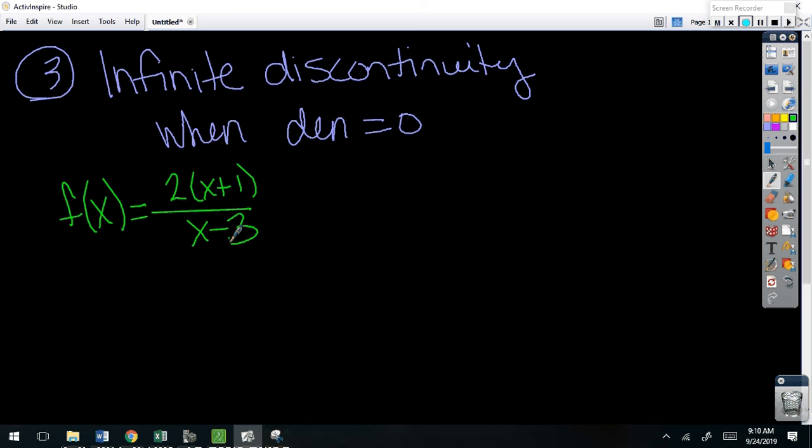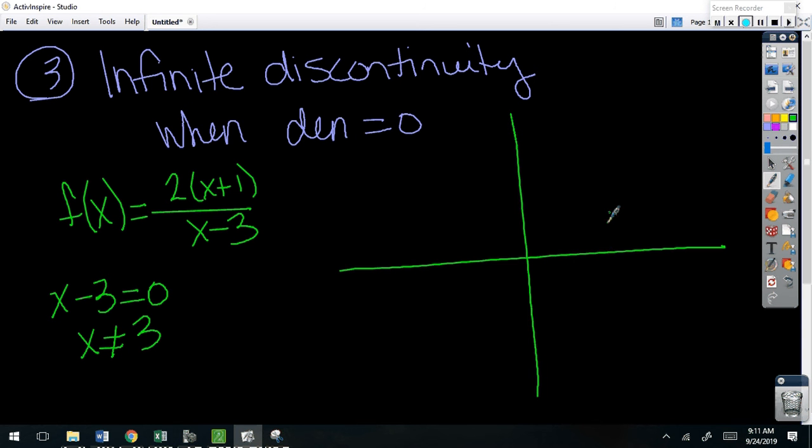Where's your domain restriction here? x-3, what about it? It can't be. So what can x not be? So when you graph this, it ends up looking like this. And it actually goes up. I'm just doing a rough sketch here. So because it's got this invisible boundary here, because this is where my denominator would equal zero, that is an infinite discontinuity. It goes on forever and ever. x can never be that number. So it is an infinite discontinuity. Does that make sense?